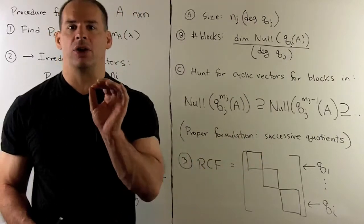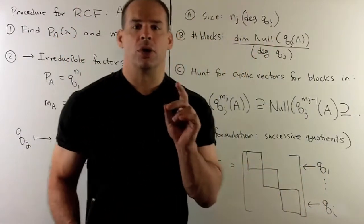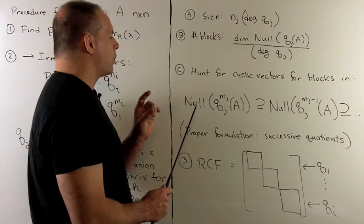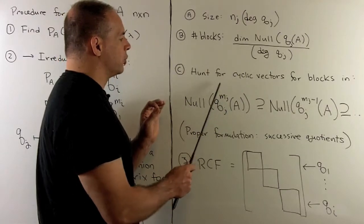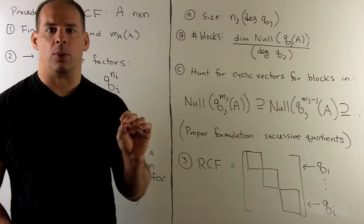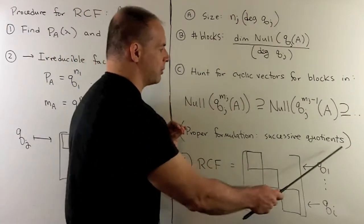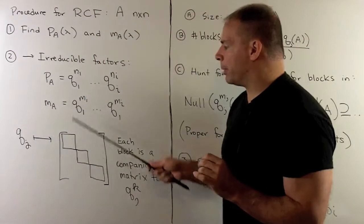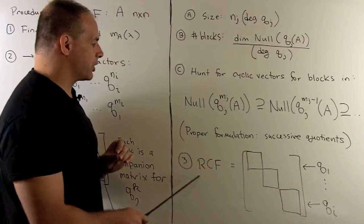If we want to get a handle on the size of each block, we're going to have to look for cyclic vectors in these vector spaces. We start with the null space of q_j^{m_j} applied to A, then keep dropping the degree one by one. That takes a little bit of work. The proper formulation would be to look at quotient spaces. Once we set up our blocks, we assemble them all into one big matrix — the rational canonical form.